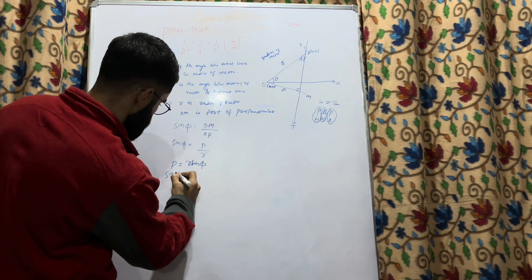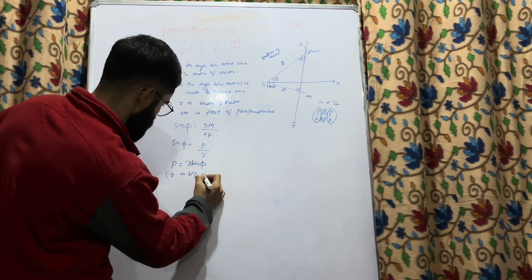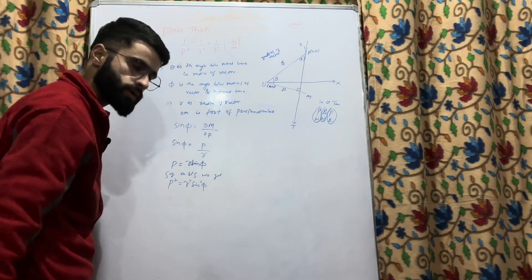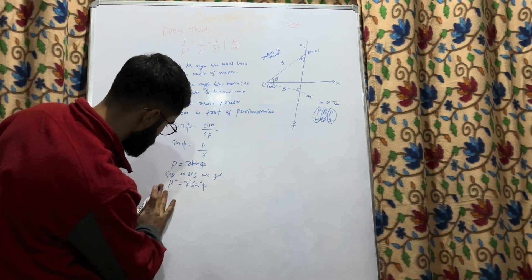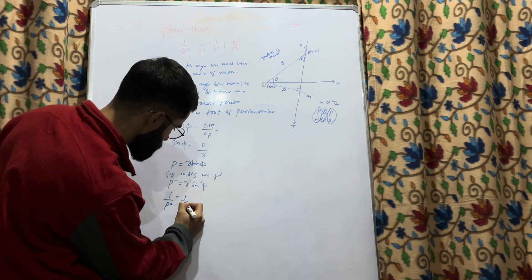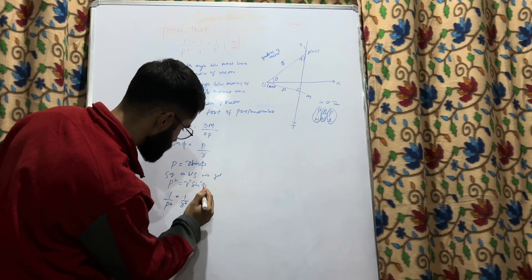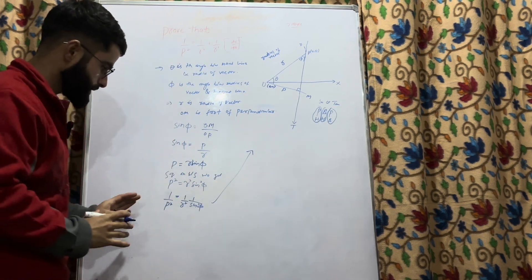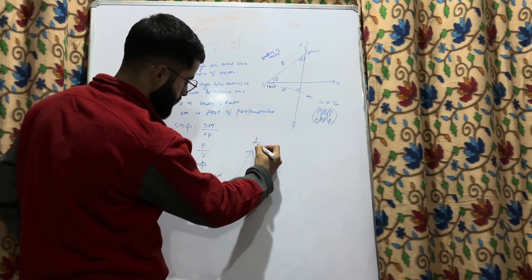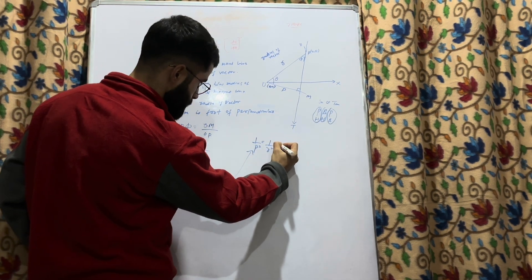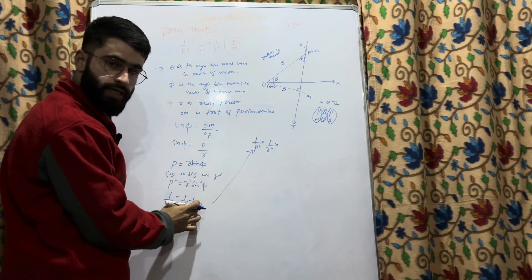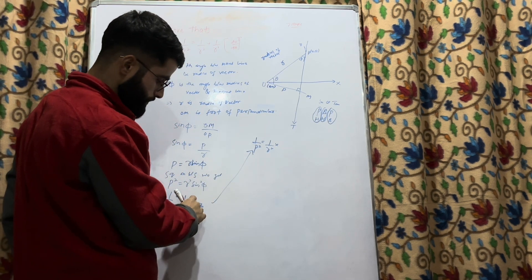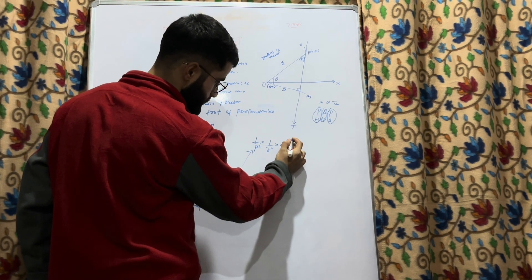Squaring both sides, we get p² = r²·sin²(φ). Taking the reciprocal of this equation, we get 1/p² = 1/r² · (1/sin²φ). Now 1/sin²φ is cosec²φ.